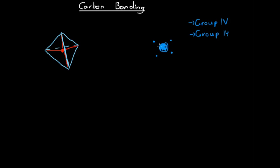All atoms like to have full outer shells of electrons, and those outer shell electrons are what's important in chemical reactions. Carbon atoms have 4 outer shell electrons, and to fill that outer shell they need a total of 8 electrons — another 4 on top of what they already have. The way carbon atoms do that is by forming covalent bonds, where they can share electrons with other atoms.